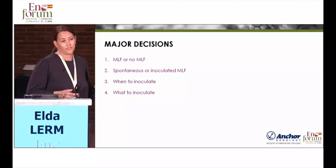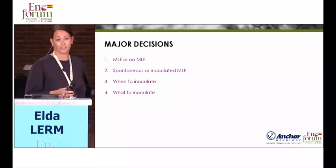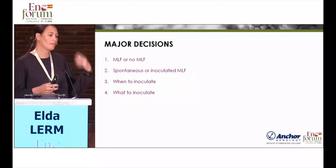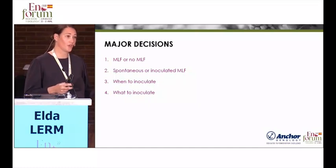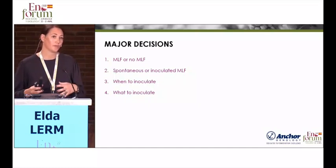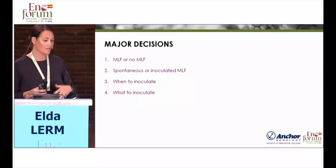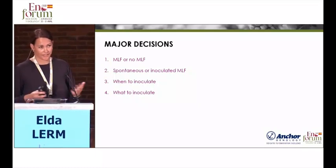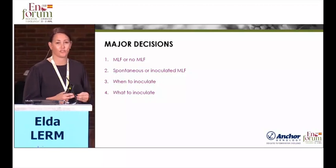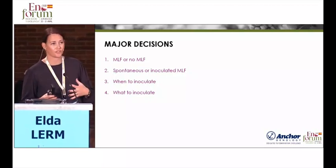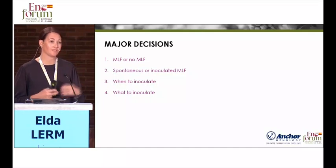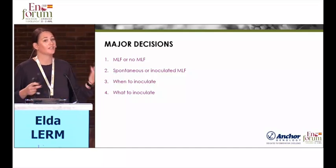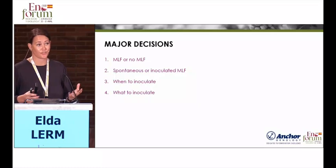The first question is: do you want malolactic fermentation in the first place? Is it the style of wine that you want? If you do want it, are you going to inoculate or wait and hope it happens spontaneously? If you are going to inoculate, when? There are the two main options — co-inoculation and sequential. And then, which bacteria are you going to select and why?